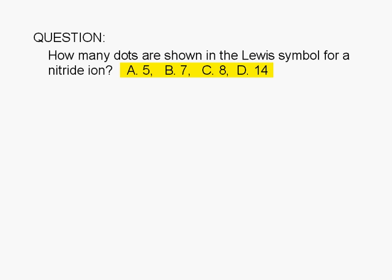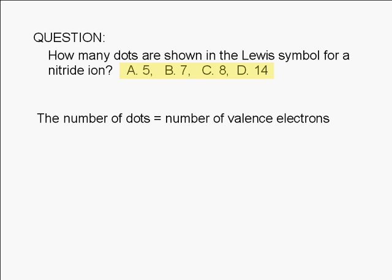How many dots are shown in the Lewis symbol for a nitride ion? 5, 7, 8, or 14?